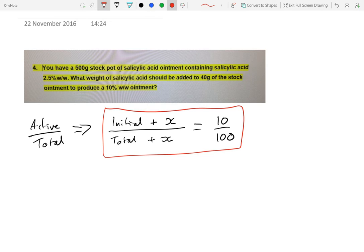So the only problem here is the initial. We need to know how do we find that initial? Well, the initial amount of salicylic acid in the 40 grams, it says it was 2.5% weight/weight.